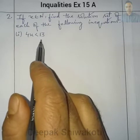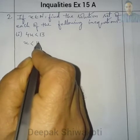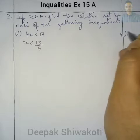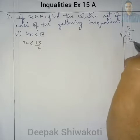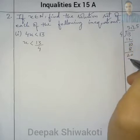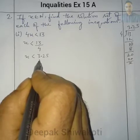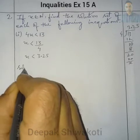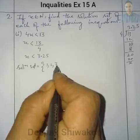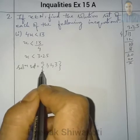Question 1: 4x < 13. Dividing each side by 4, we get x < 13/4. Now 13 divided by 4 equals 3.25. So x < 3.25. From the natural numbers, the values less than 3.25 are 1, 2, and 3. So the solution set is {1, 2, 3}.